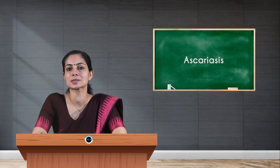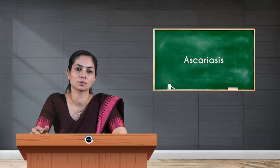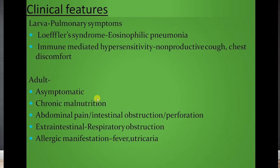When the rhabditiform larva migrates through the body, it can lead to pulmonary symptoms — for example, Löffler's syndrome, which is an eosinophilic pneumonia — and immune-mediated hypersensitivity. The patient may complain of coughing and chest discomfort. Regarding adult worm symptoms, most people with ascariasis are asymptomatic, but it can lead to chronic malnutrition, abdominal pain, and with high worm load, intestinal obstruction or perforation. Extra-intestinal symptoms include respiratory obstruction and allergic manifestations — the ascarone fluid leaking from the parasite can lead to fever and urticaria.